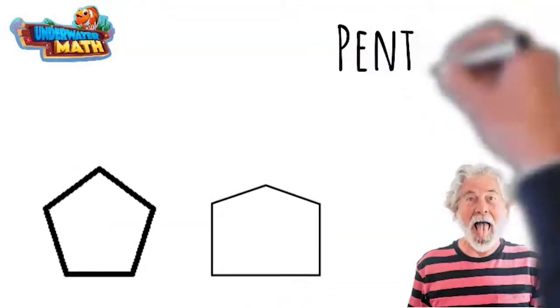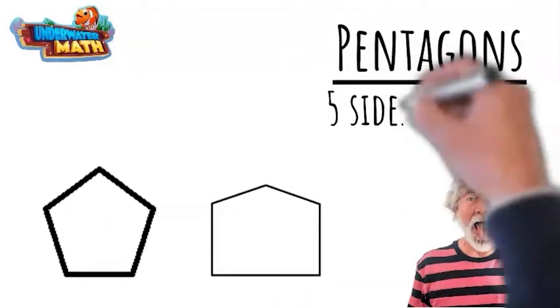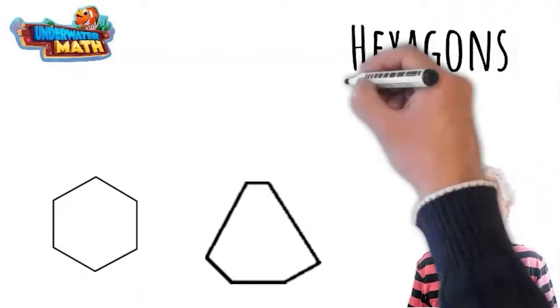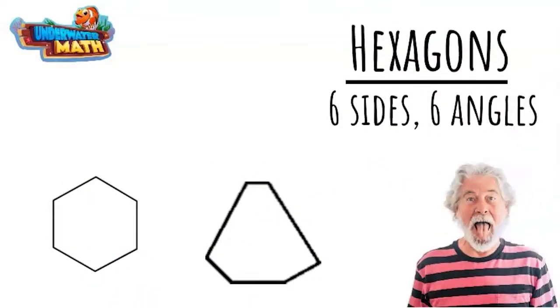Five-sided shapes are called pentagons. They also have five corners and five angles. Six-sided shapes are called hexagons. You will see that they also have six corners and six angles.